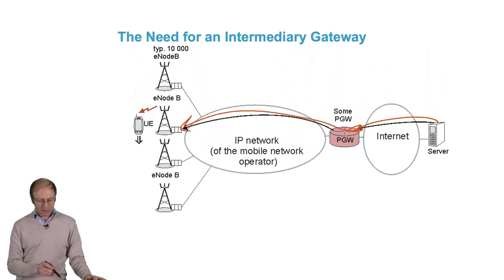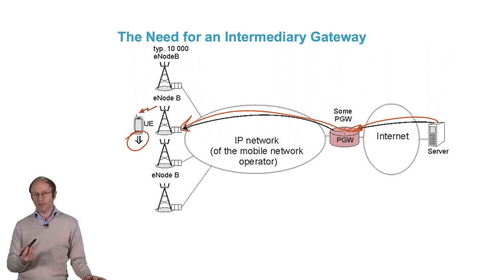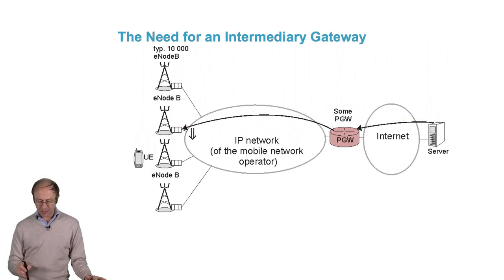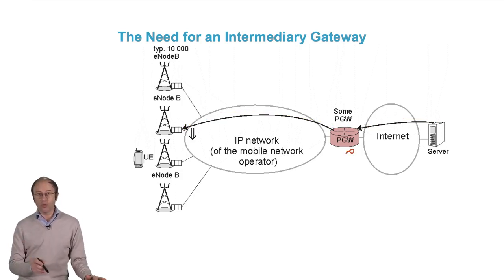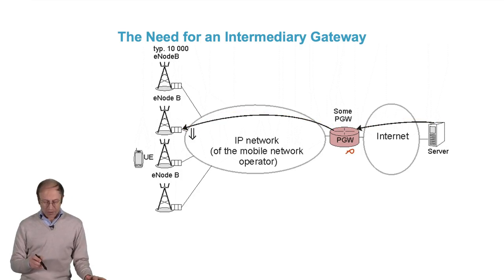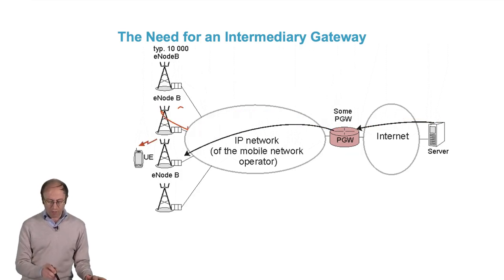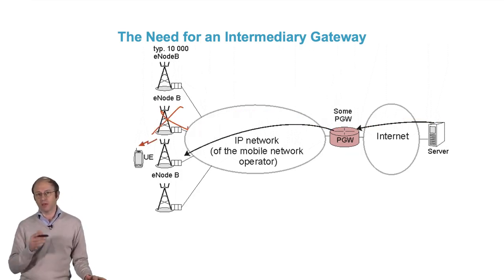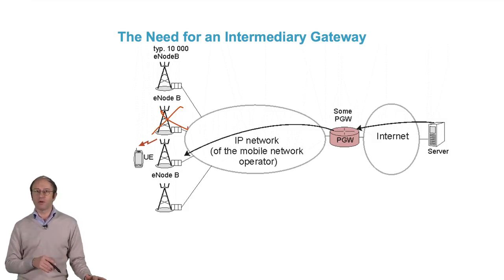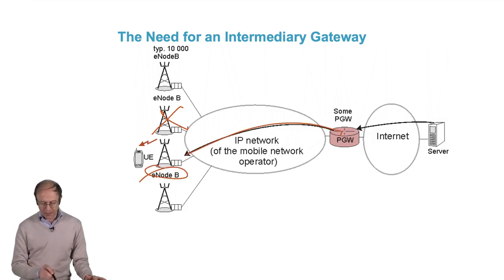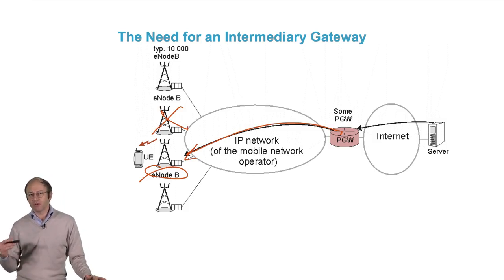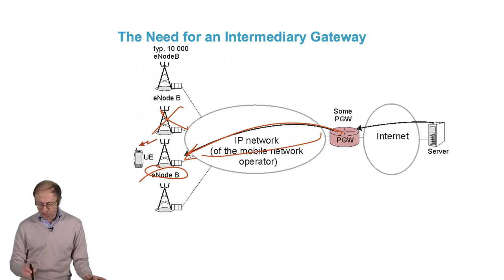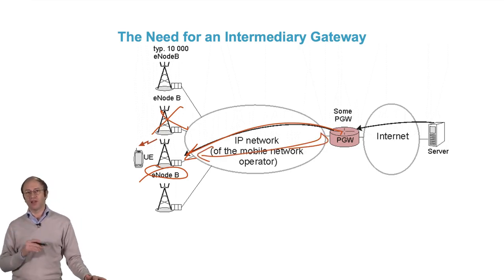If we consider the transfer to a terminal when this terminal is moving, we can see that we'll have to notify the P-Gateway and route data not to the former eNB where the subscriber was before, but to the new eNB.